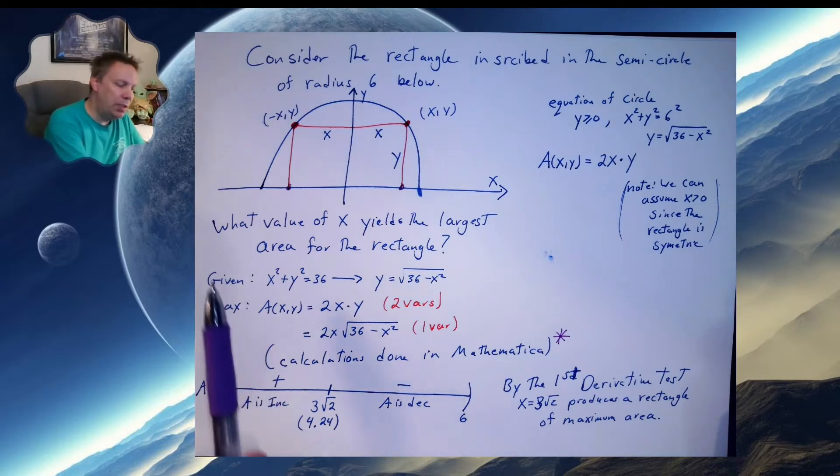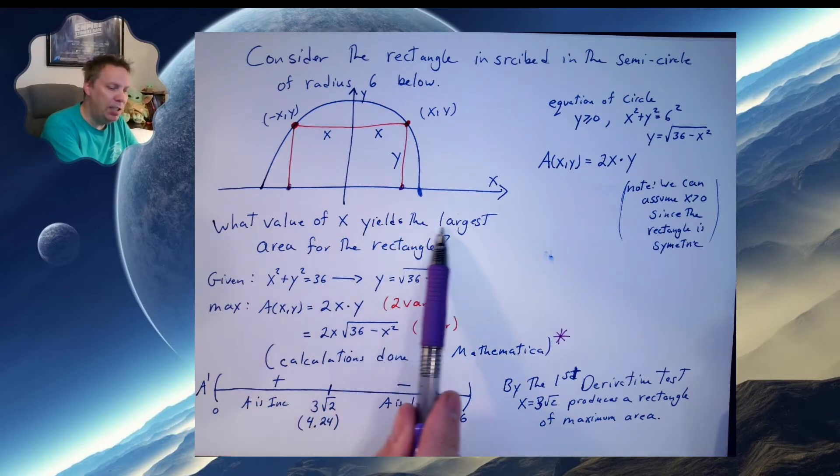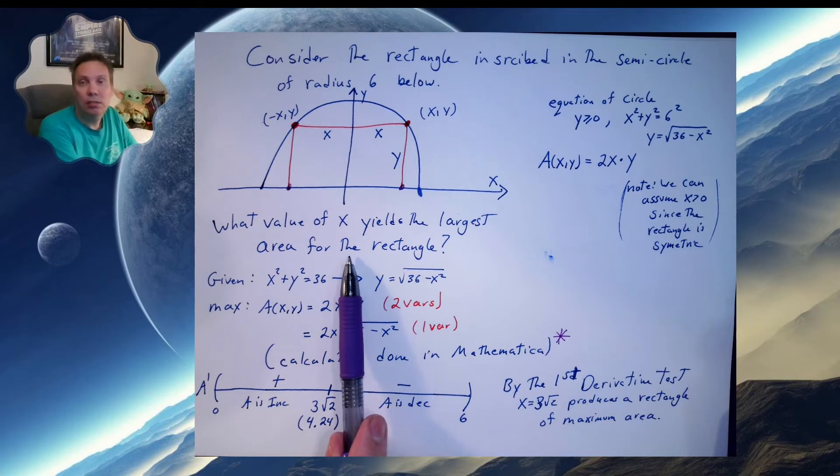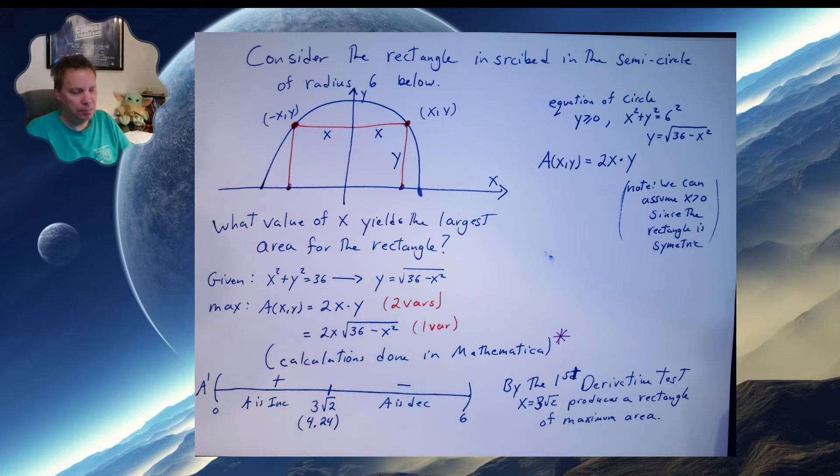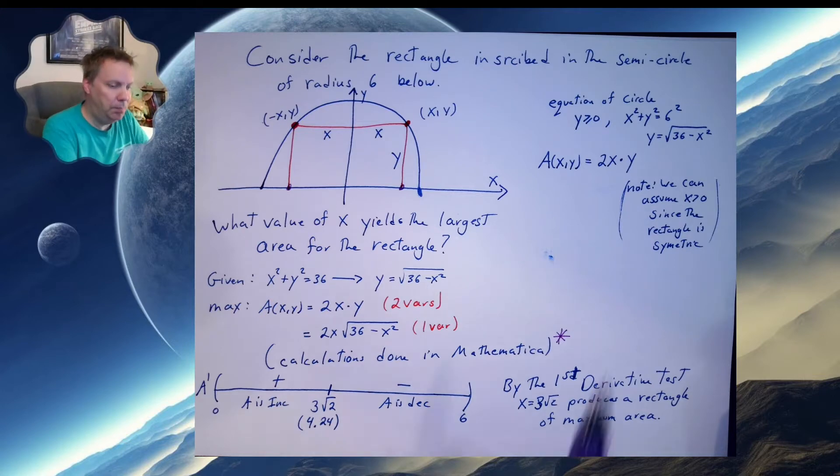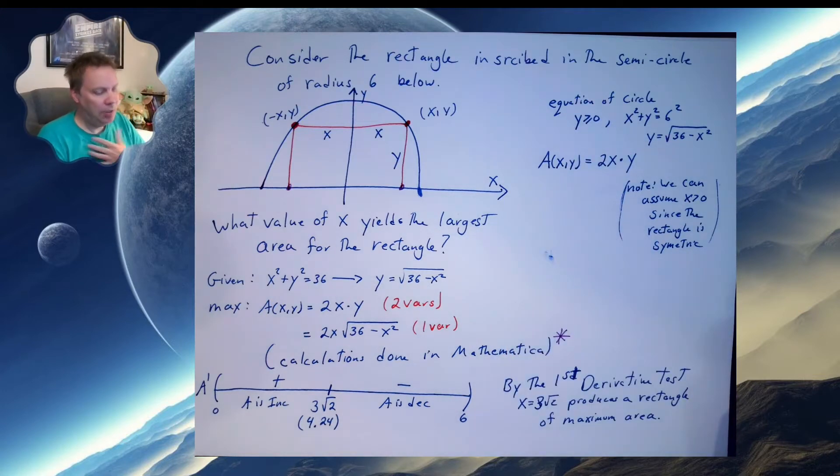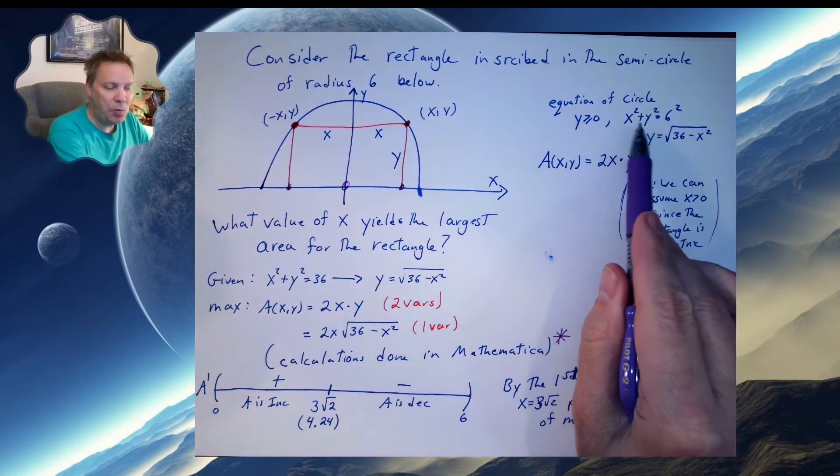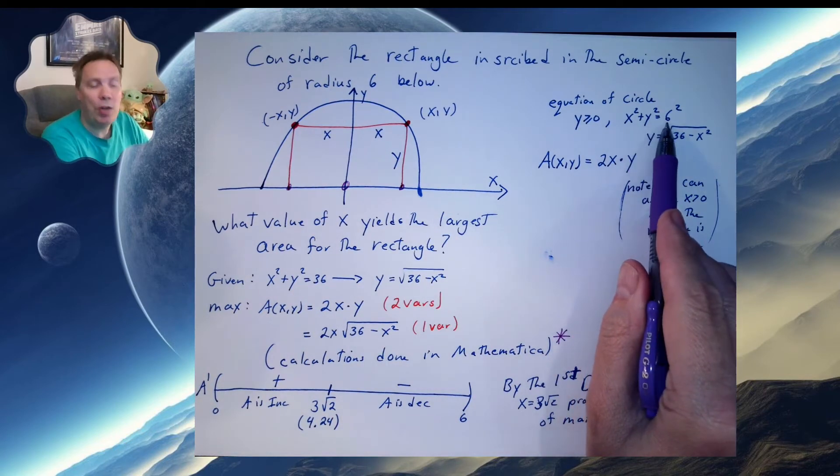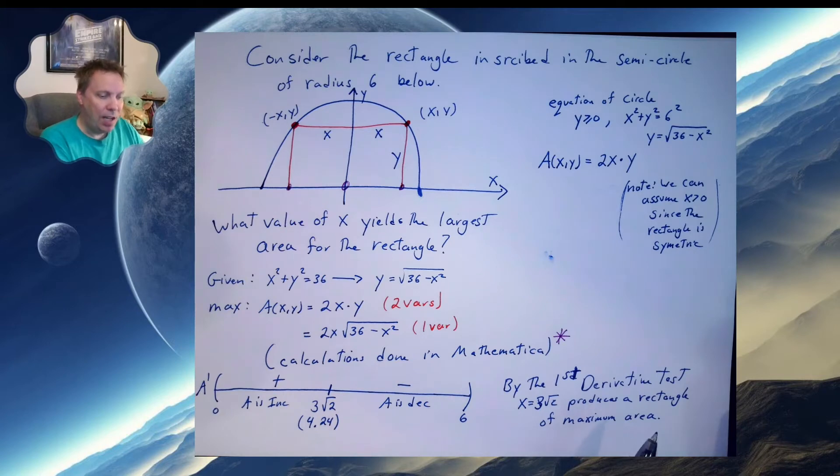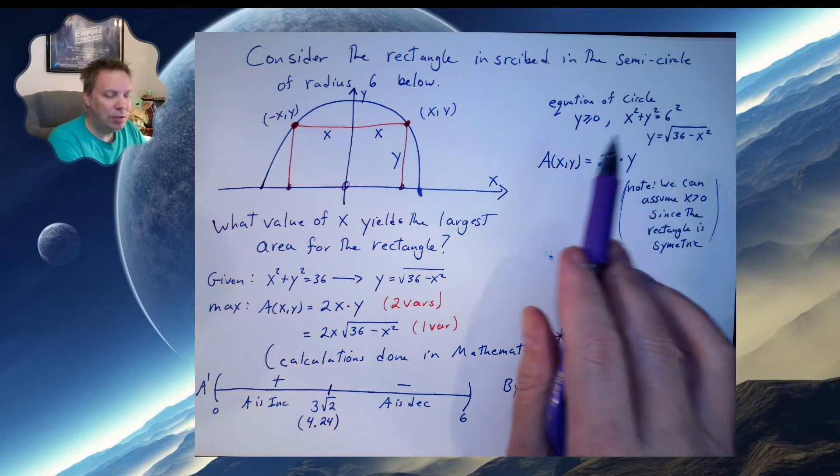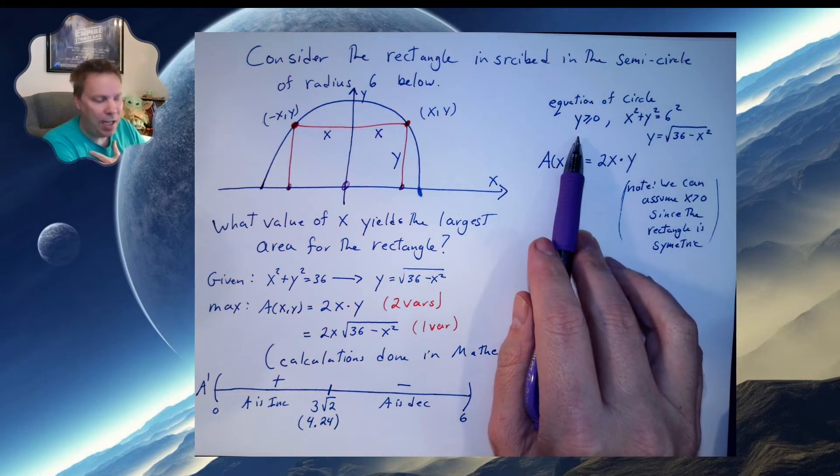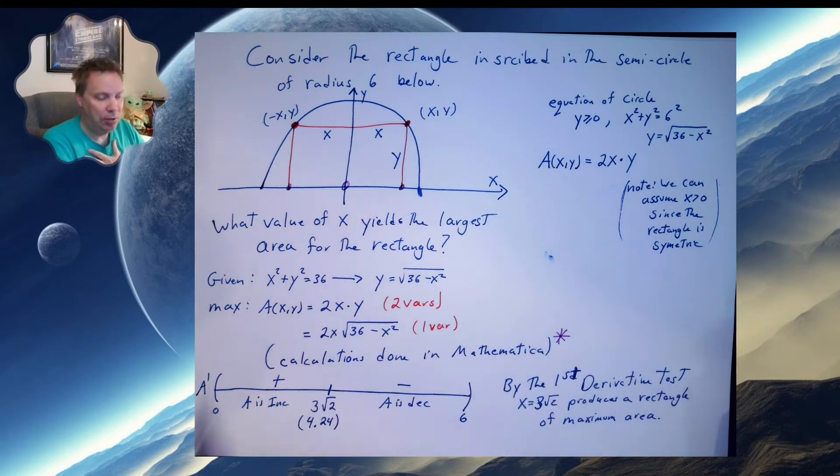So the question I have is what value of x yields the largest area for the rectangle? Well, let's do some preliminary work first. The equation of a circle. Since the equation of the circle is centered at the origin, it's going to be x squared plus y squared equals the radius squared. And since I'm dealing with the semicircle, I chose to do the upper half, so that says y is going to be greater than or equal to zero.